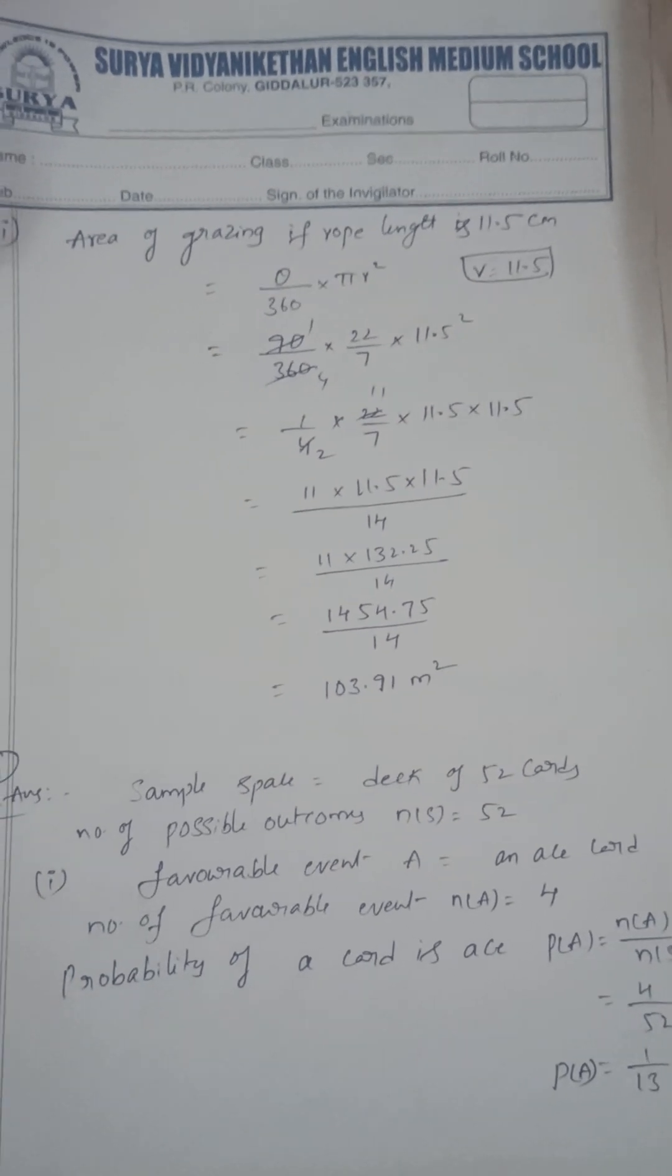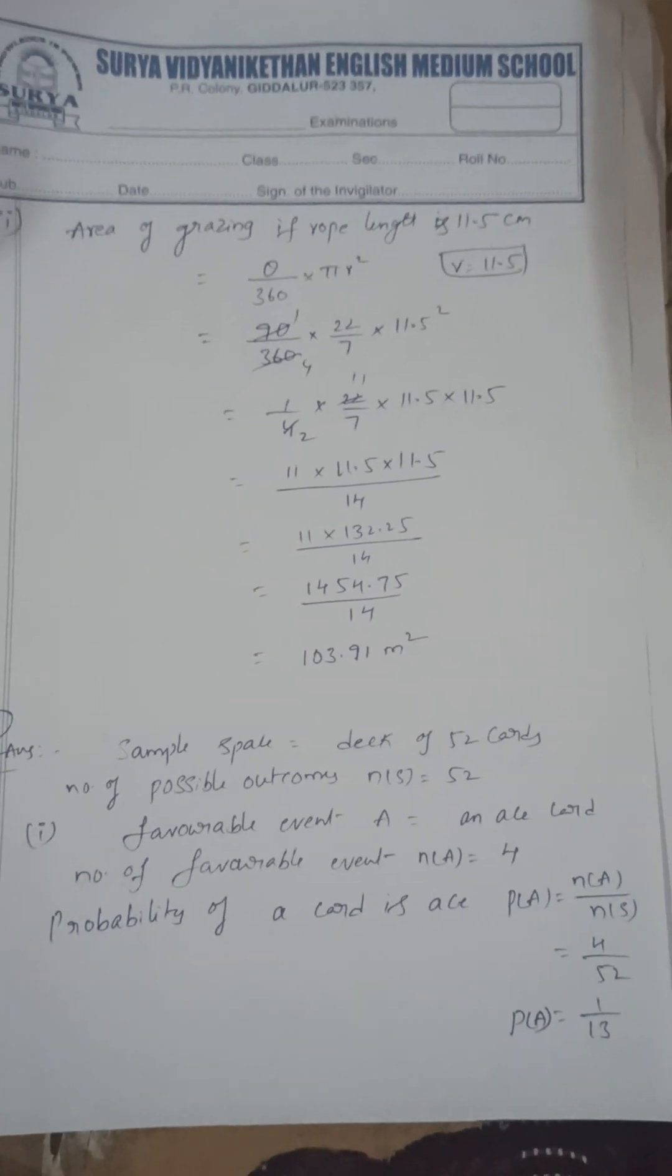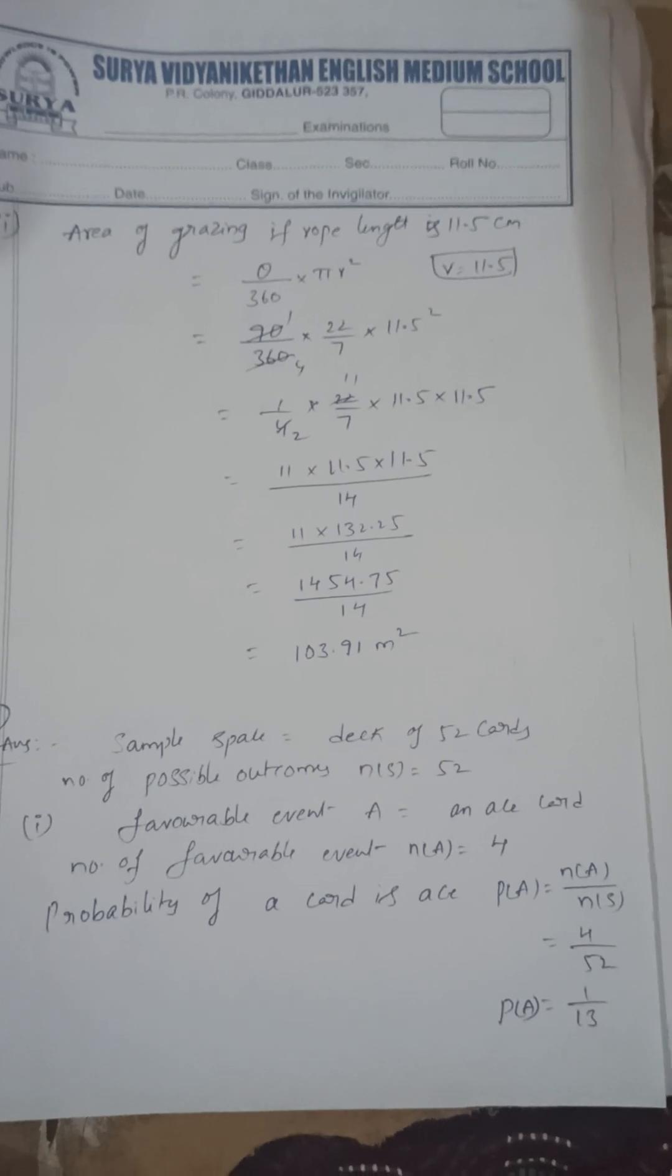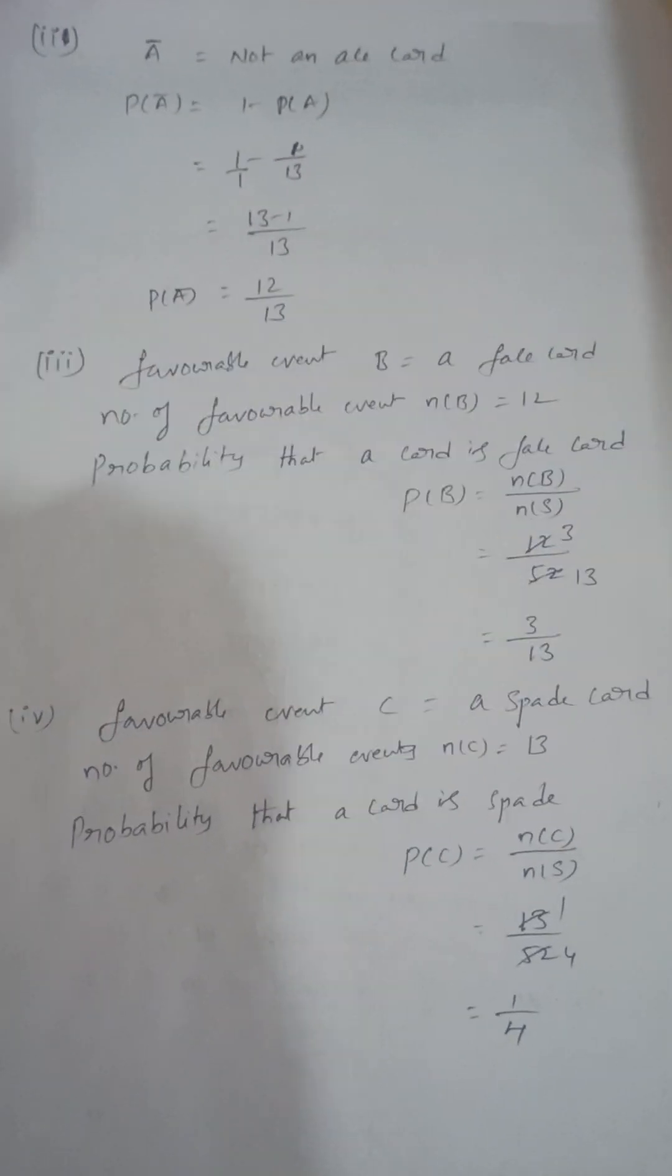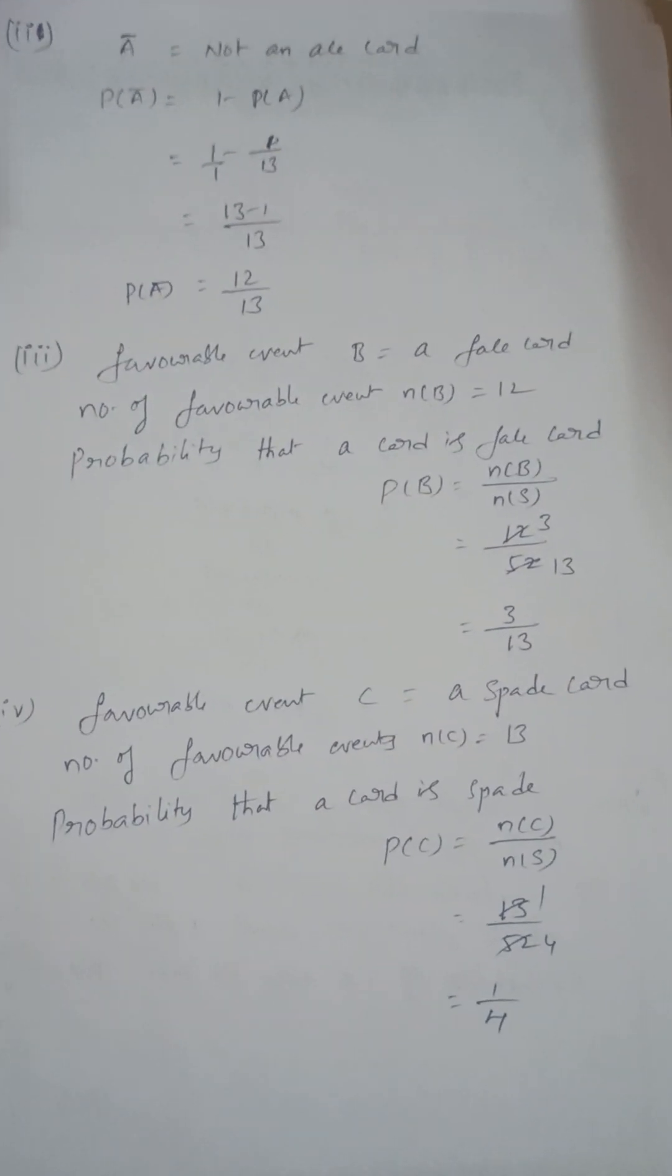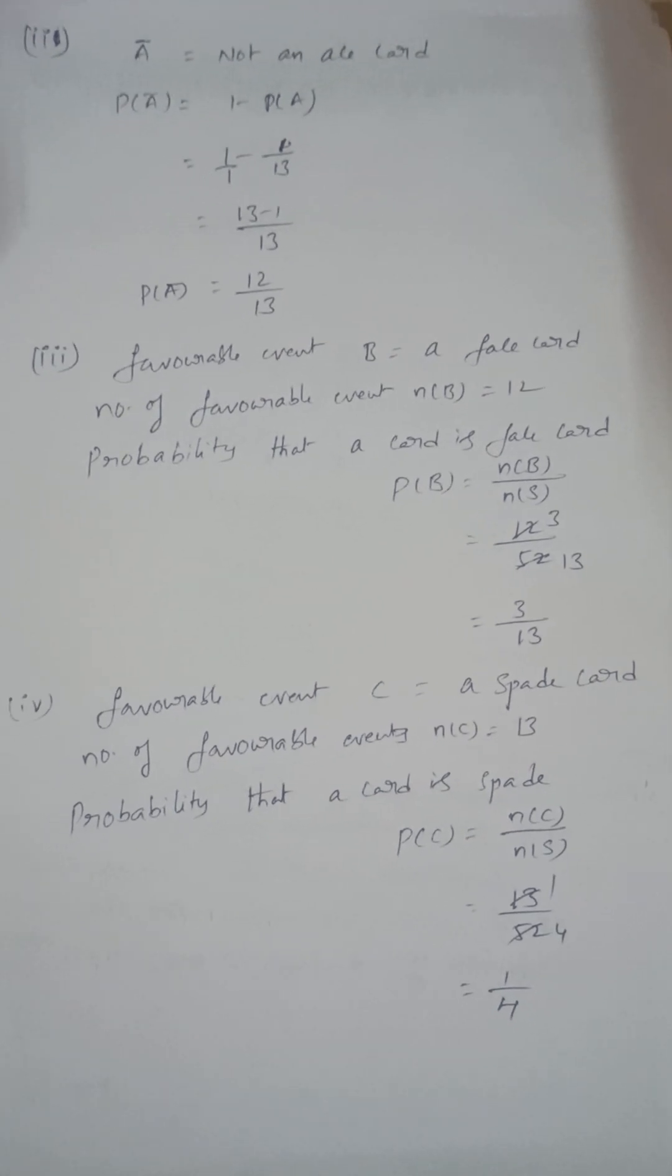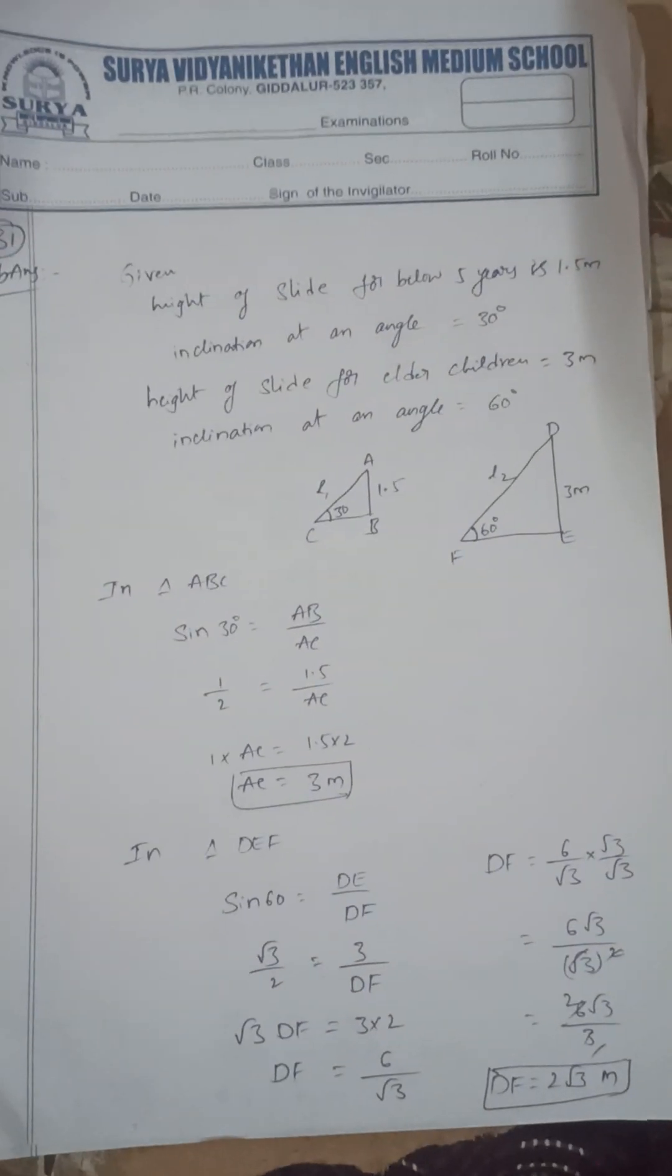Next, 31a: deck of cards. All cards are 4, so probability is 4 by 52, that is 1 by 13. Next, not an ace card, that is 12 by 13. Face card is 12 by 52. A spade card, 13 by 52.